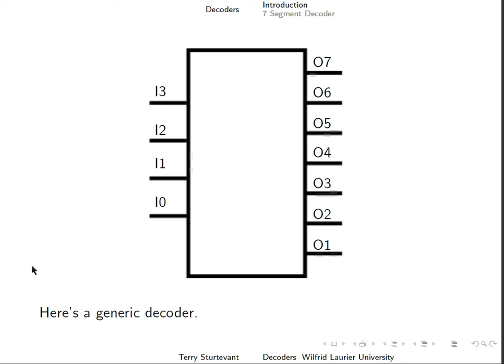So here's a generic decoder. It has 4 inputs, input 0 to 3, and 7 outputs, 01 to 07. The number of inputs and outputs could be anything.